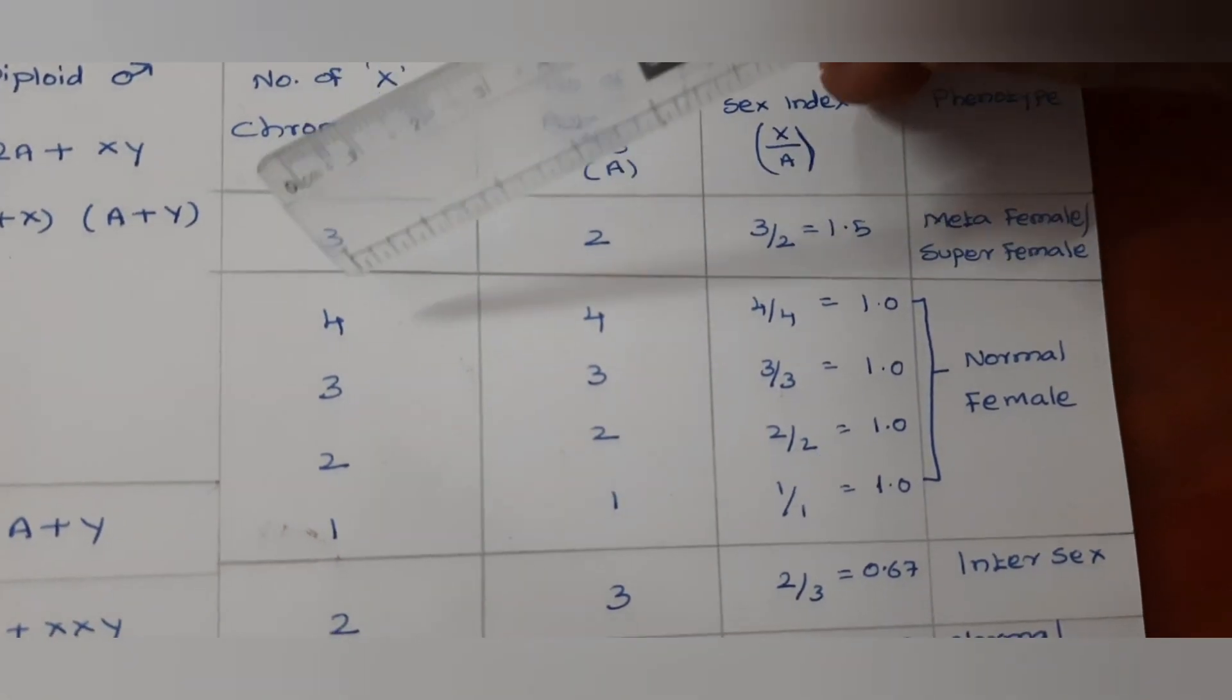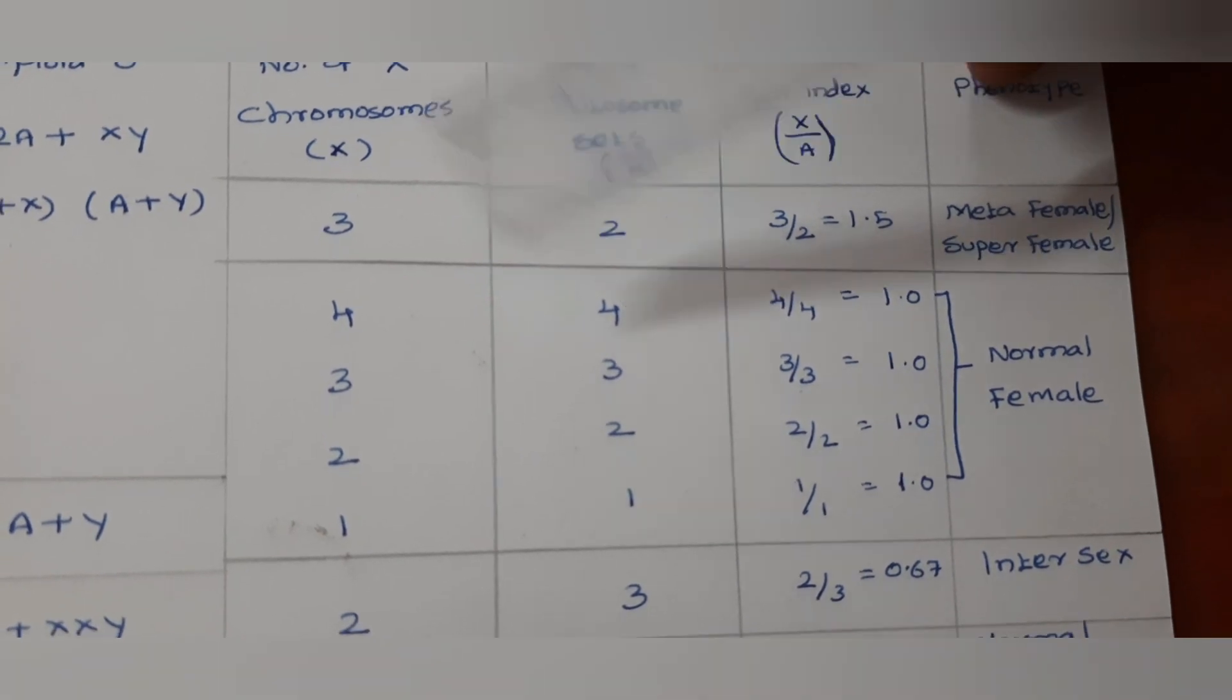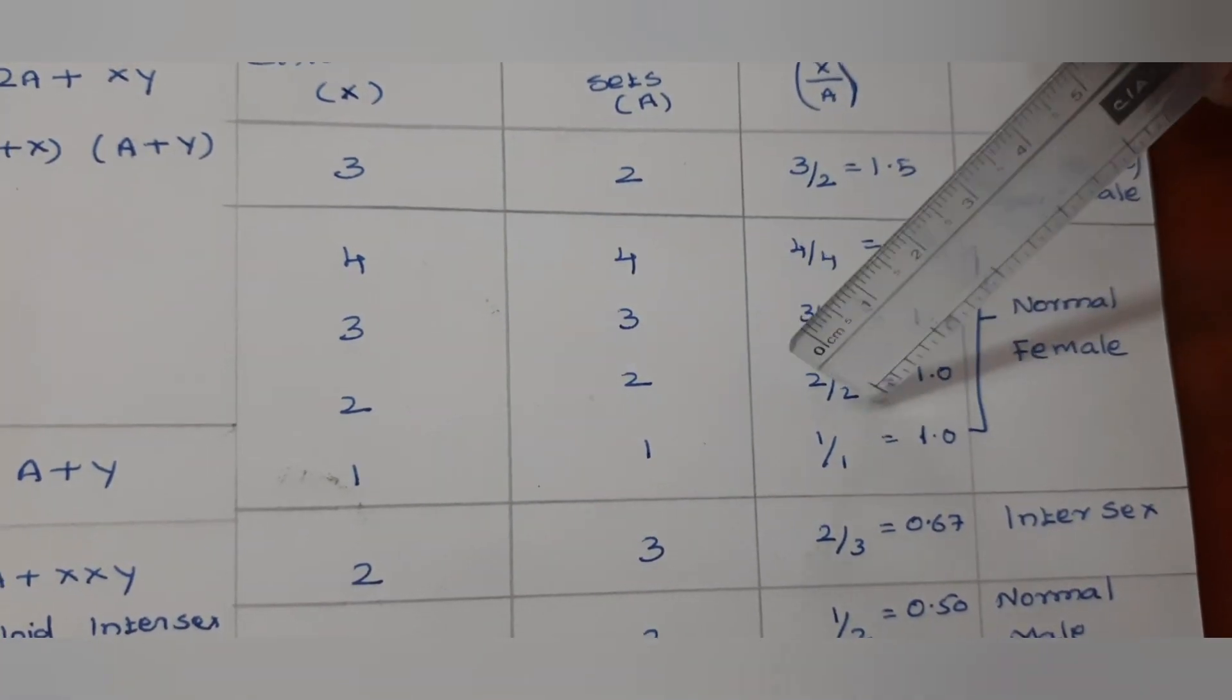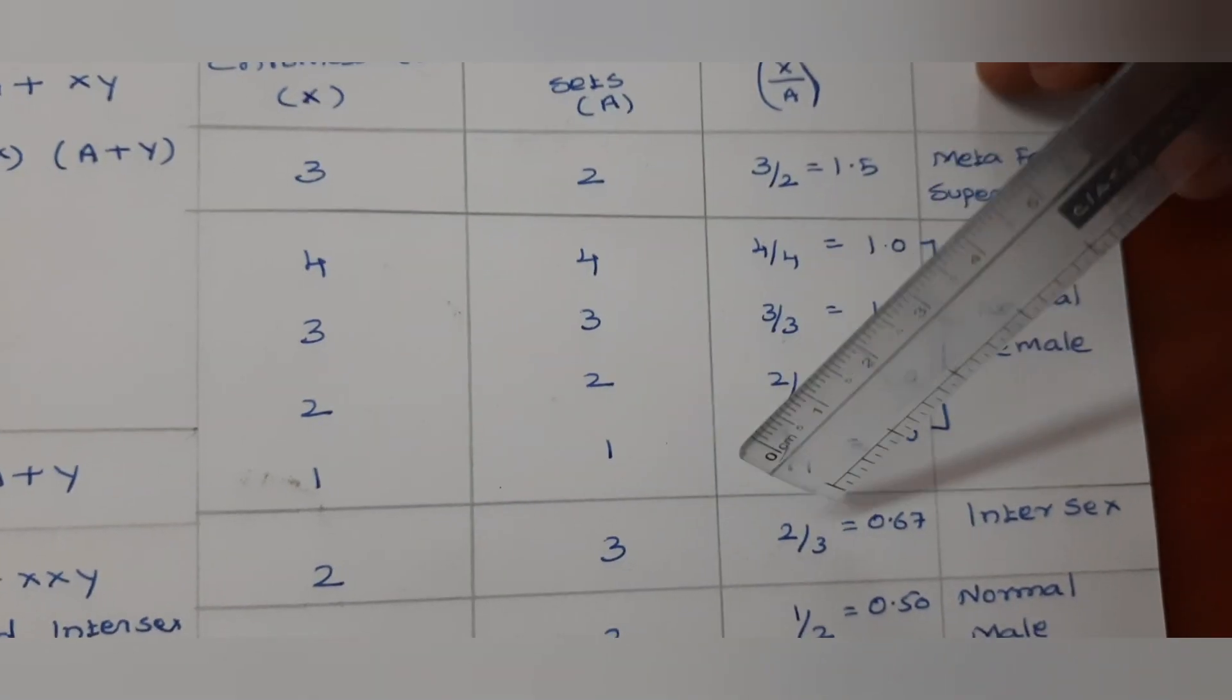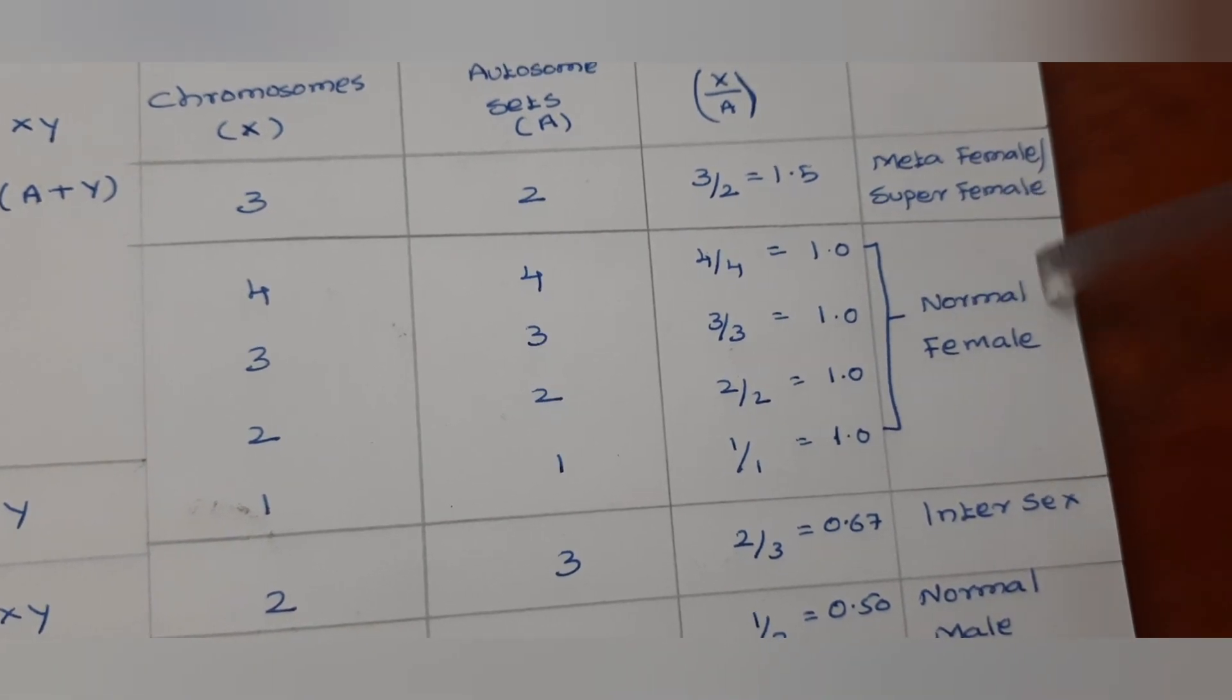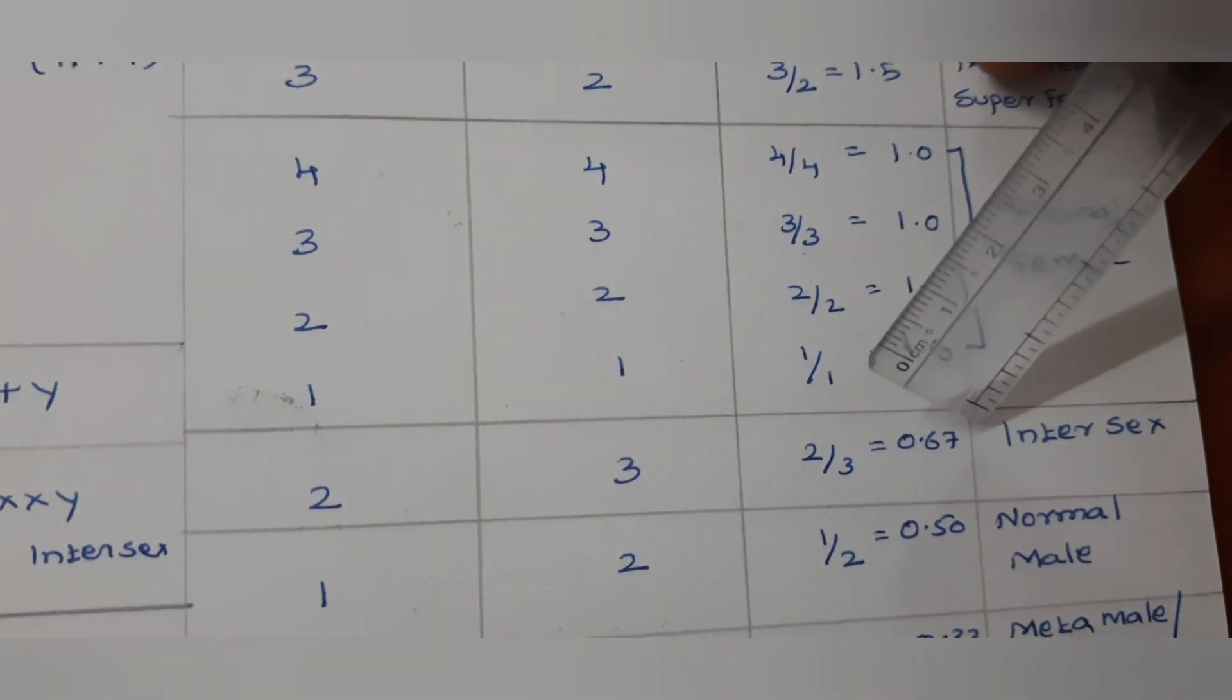Whenever the number of X chromosomes is 4 and sets of autosomes is 4, 4 by 4 equals 1. Similarly, 3 by 3 equals 1, and 2 by 2 equals 1. When the sex index value is 1, this indicates normal female.